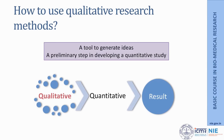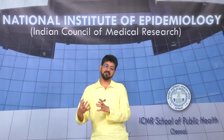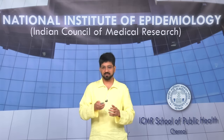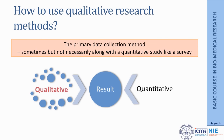How do we use qualitative research methods? You could use them as a tool to generate ideas, basically as a preliminary step in developing a quantitative study. For example, if you are trying to understand why people engage in open defecation and are developing a survey, you may do a small qualitative study to understand probable reasons, then use that to modify the questionnaire for the quantitative survey. Qualitative methods can also help understand the results of a quantitative study where you need in-depth understanding of why you are getting certain results.